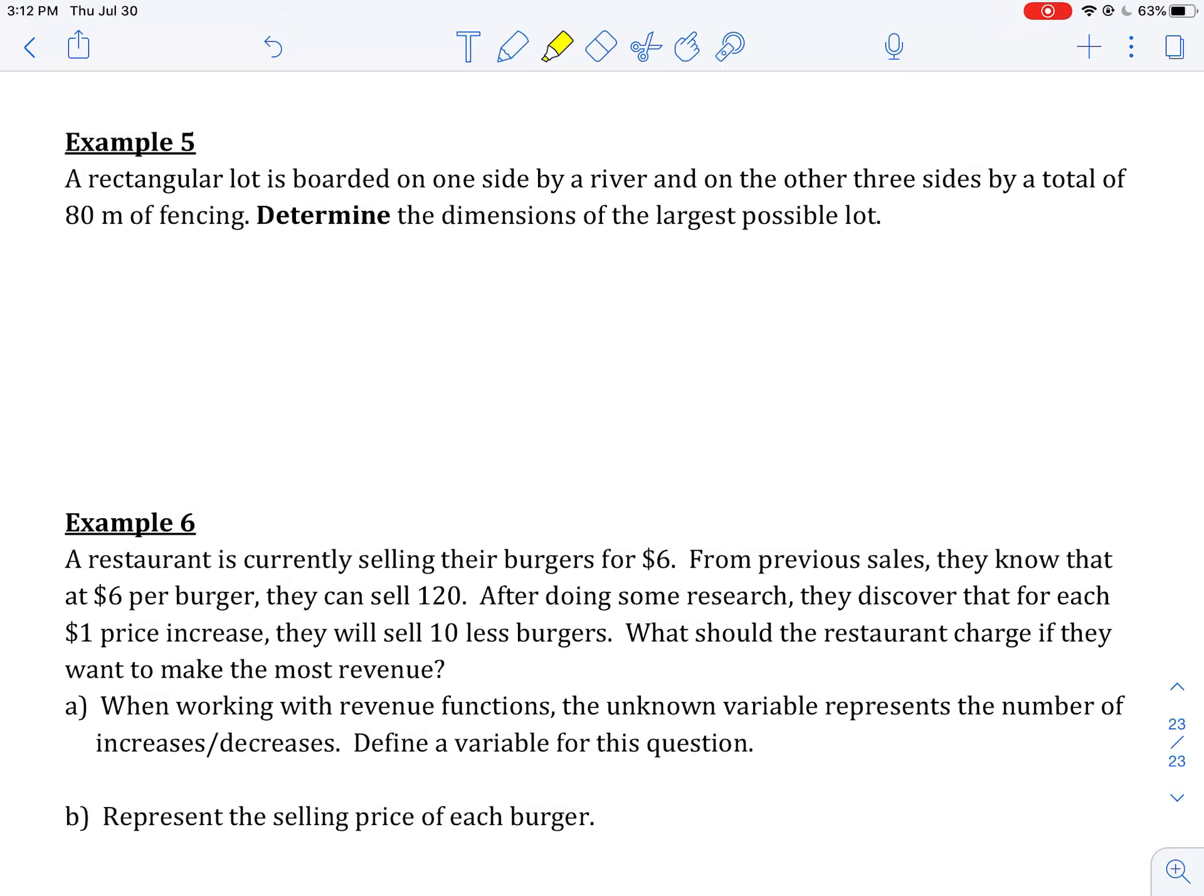Example 5. A rectangular lot is bordered on one side by a river and on the other three sides by a total of 80 meters of fencing. Determine the dimensions of the largest possible lot.